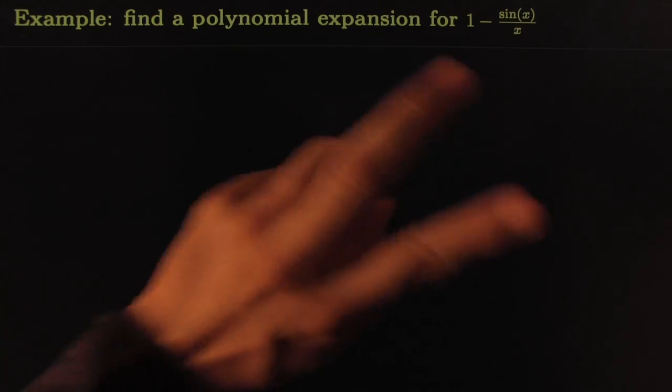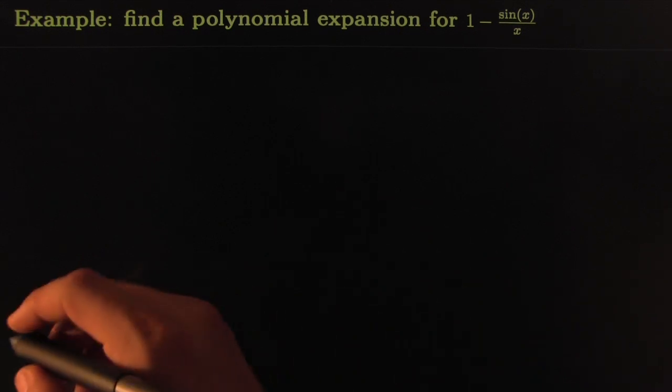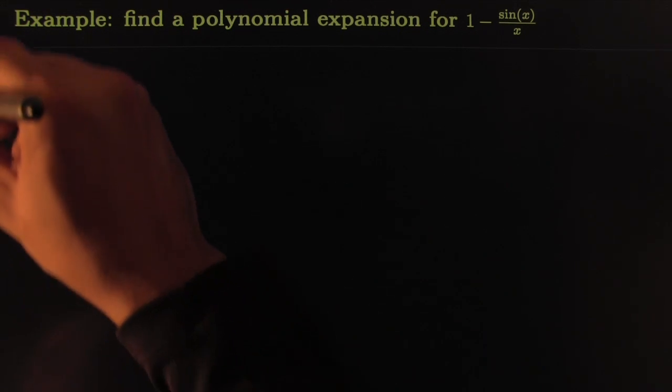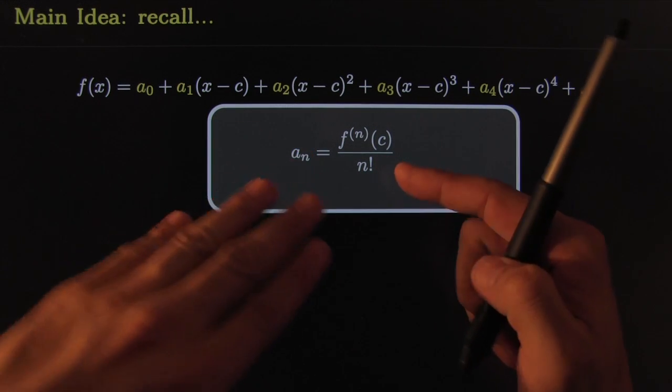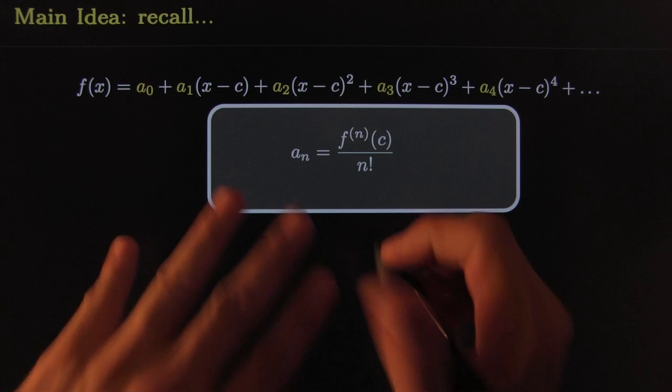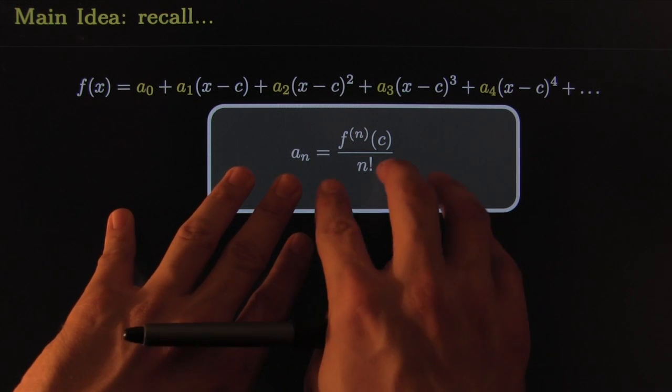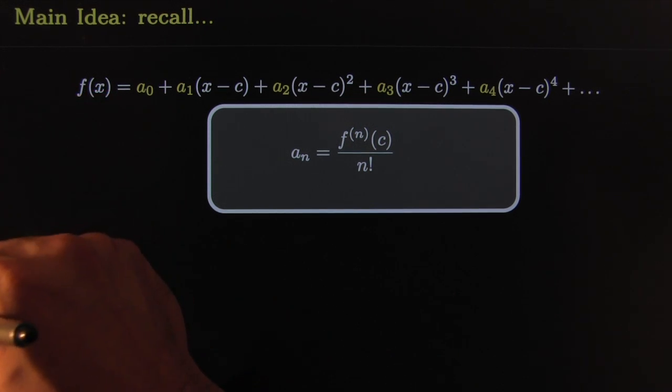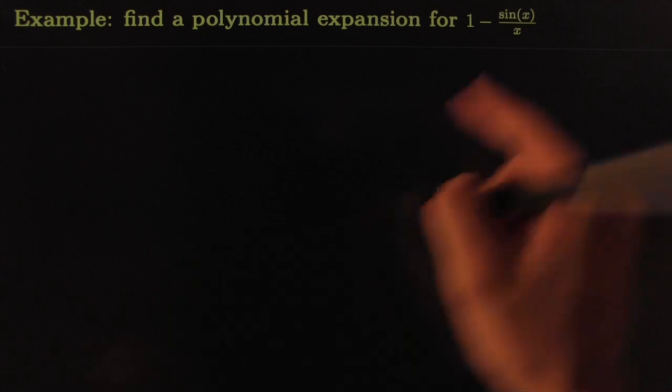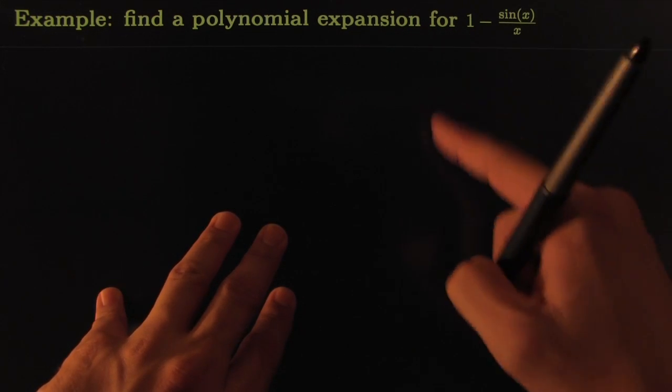How do we find the polynomial expansion for that guy right there? Again, I'm trying to emphasize a different idea: you don't always have to go back to this amazingly powerful formula. I love it, there's no respect lost for it, it's absolutely amazing. However, you don't always have to go back to it. You can always reuse things that you already know. So let's go back to, for example, 1 - sin(x)/x. I wonder if we could use some of the things that we've already done to get that one.